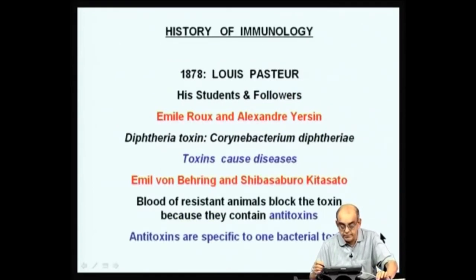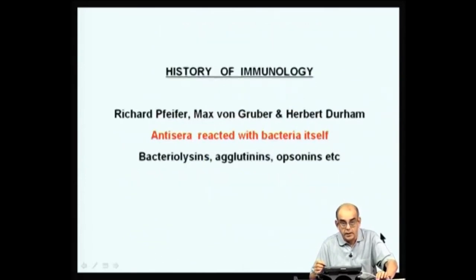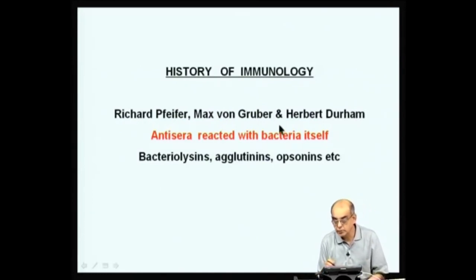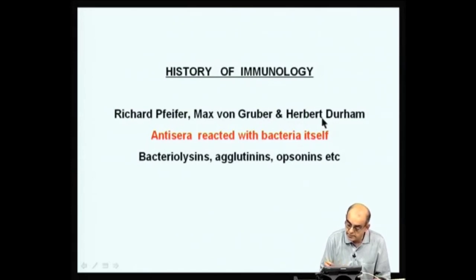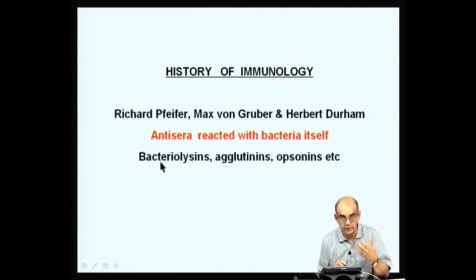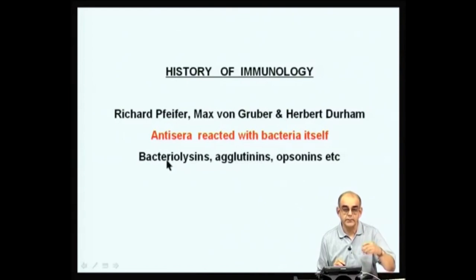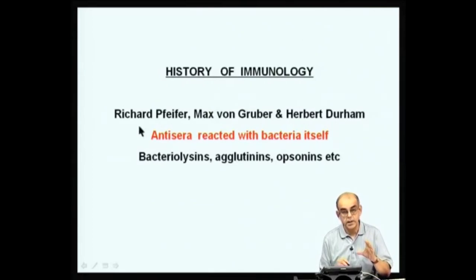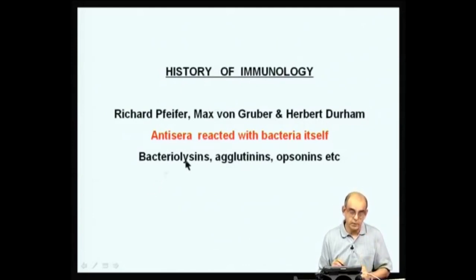That was about Louis Pasteur and his students. We come on to other observations made by scientists Pfeiffer, Von Gruber, and Durham. They discovered that when they injected toxins to these animals, the blood or body humor — which was the anti-sera — had antitoxin material. You just take the blood, allow it to clot, and what you have when you remove the clot is called the serum. This serum, they found, not only reacted to the toxin — it also reacted with the bacteria that secreted the toxin.